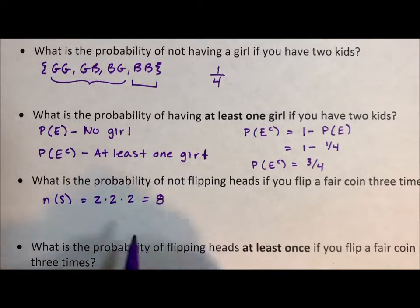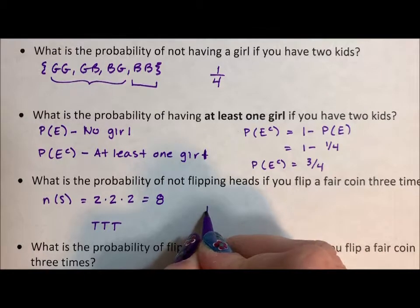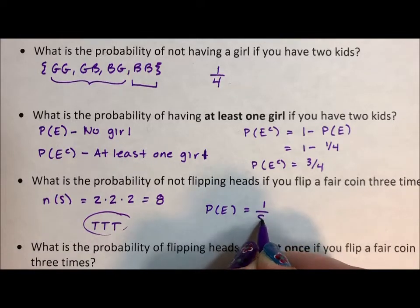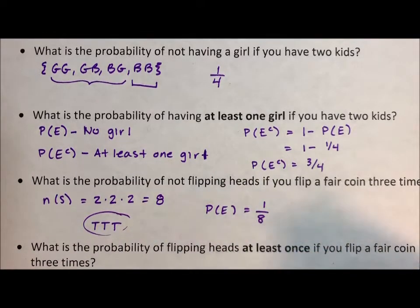And not flipping heads—there's only one event: tails, tails, tails. So the probability of this event is one outcome out of eight. So one out of eight.